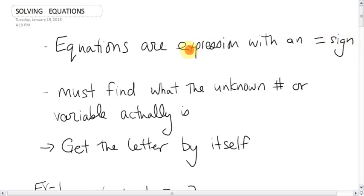Expressions were just math statements that you had to simplify into simpler terms. Equations have an equal sign so equations are equal to something. We have to figure out what that something is and that unknown number as we know is called a variable.